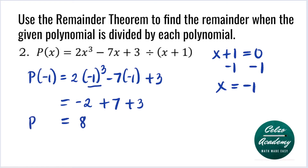So P of negative 1 is 8, and this means 8 is the remainder when P of X is divided by X plus 1.